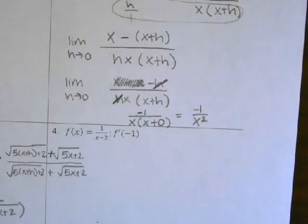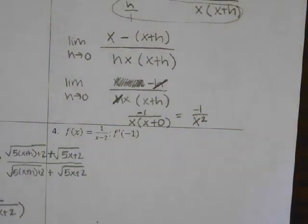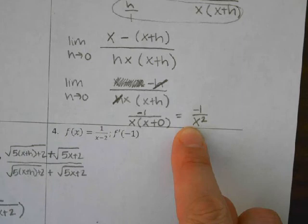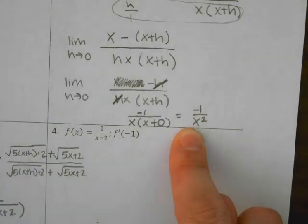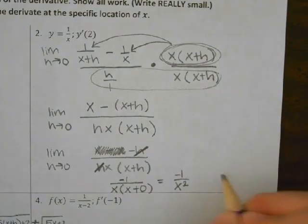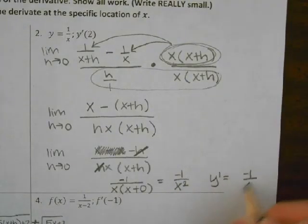So that's the equation of our derivative. So if you have the curve 1 over x and you want to find the slope at any point on 1/x, you're going to take the x value and plug it into this equation. What notation did they use? Y prime. So we are going to say y prime equals negative 1 over x squared. There's our first answer.